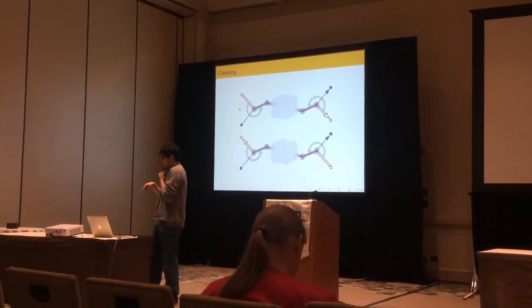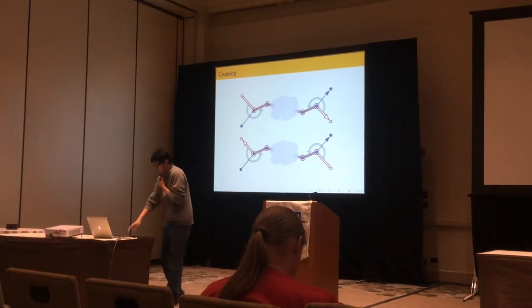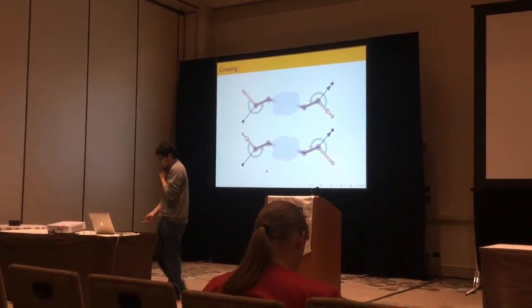So this is a forward crossing on the path. I mean, there's a backward crossing where the paths go in a different direction.